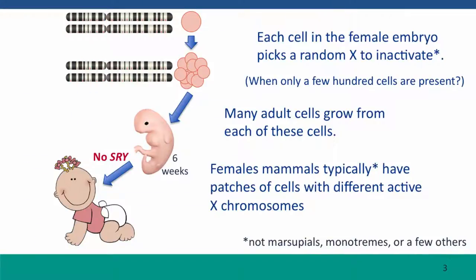So you'll remember from this diagram from the previous lecture. Early in development, the fertilized egg is determined to be male or female by whether or not it inherited a Y chromosome. If it had two X's, then early in development, probably at a stage when only a few hundred cells are present, each cell picks a random X to inactivate.